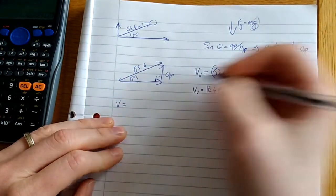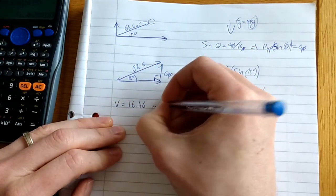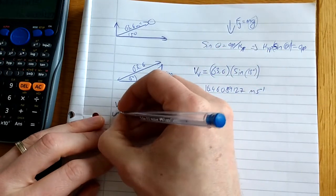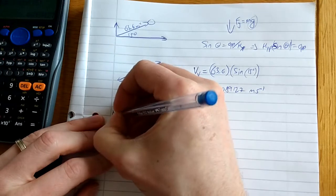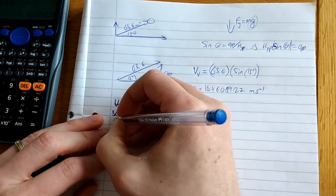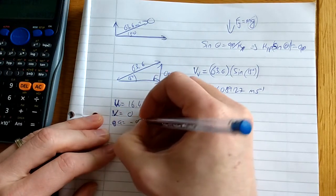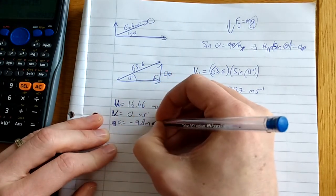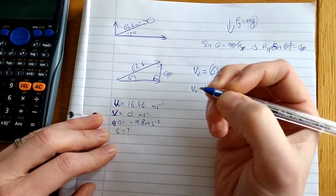Let's say 16.46 meters per second is good enough. That's my initial velocity. My final velocity v is zero meters per second. Time isn't important. My acceleration is minus 9.8 meters per second squared. And s is what I want to know, t is not important.